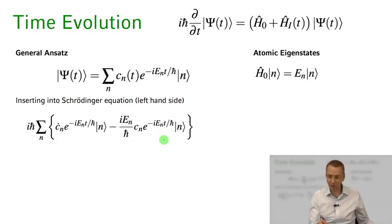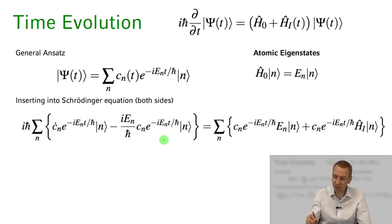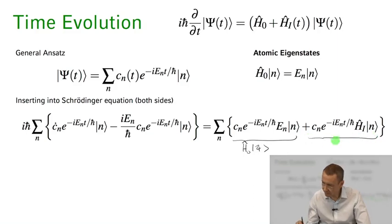And now I do that for the right hand side. I plug this in on the right hand side, my ansatz wave function psi of t. Then I will find the following terms: H0 acting on psi gives me this first term here, so this is basically H0 acting on psi and this here is basically HI acting on psi.